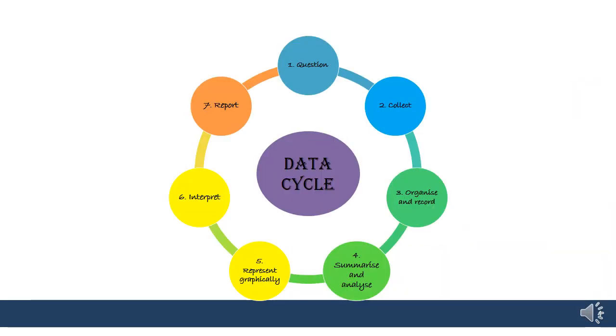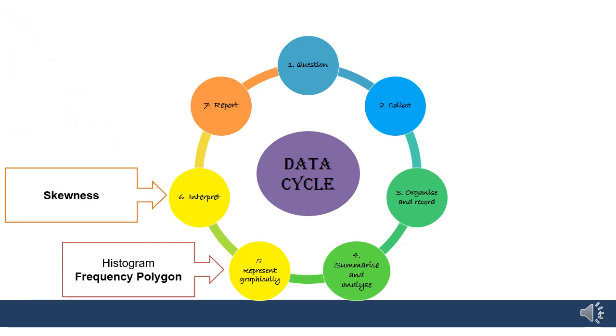So in terms of our data cycle, we know that using a histogram we can represent grouped data, but I'm also going to teach you in this lesson how to use what we call a frequency polygon, and it's really easy if you know how to do a histogram. And then using that frequency polygon we can talk about skewness in terms of grouped data.